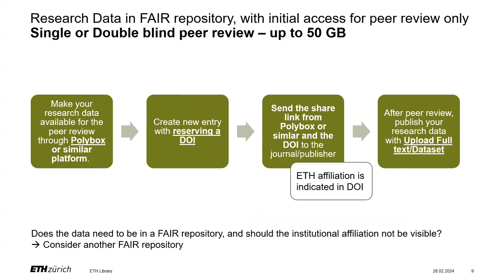For the single or double blind peer review, when you have research data up to 50 gigabytes, we recommend sharing the data through Polybox or similar and then creating a new entry in the research collection so you can send the DOI to the publisher. Please be aware that the ETH affiliation is indicated in the DOI, and you can also do your upload after the peer review in the research collection. Sometimes the publisher requires that the data should be in the FAIR repository beforehand — in that case, please use another repository. Unfortunately, generating a shared link specifically only for peer review of research data under 50 gigabytes is not possible in the research collection.